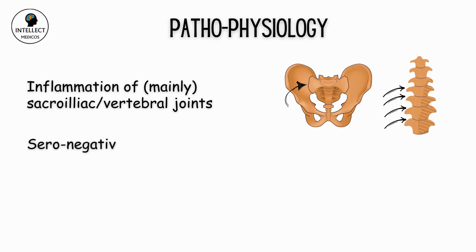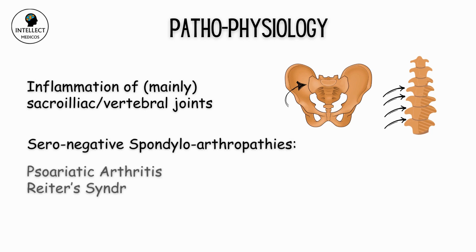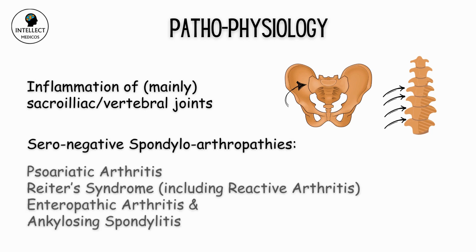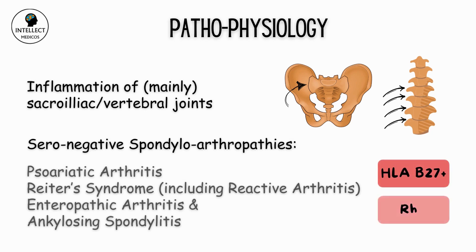Ankylosing spondylitis is part of a group of seronegative spondyloarthropathies which are positive for HLA-B27 and negative for rheumatoid factor.